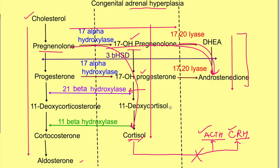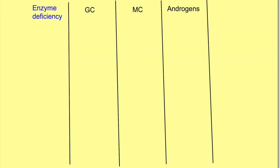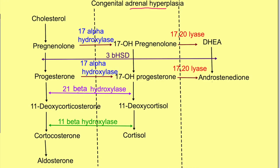With these fundamentals, let us see the various enzyme deficiencies which can cause congenital adrenal hyperplasia. The most important one is deficiency of 21-hydroxylase. Physiology books have mentioned this enzyme as 21-beta hydroxylase while other books call it 21-alpha hydroxylase, but we will remember it as 21-hydroxylase deficiency.